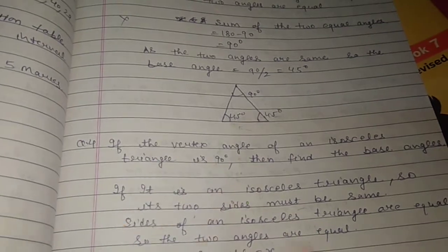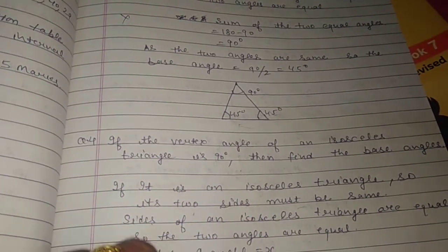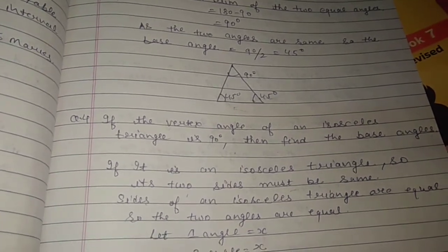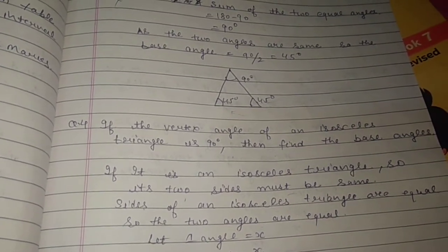If it is an isosceles triangle, then two sides are equal. If it is an isosceles triangle, then its two sides must be the same. The sides of an isosceles triangle are equal, so the two angles are equal.